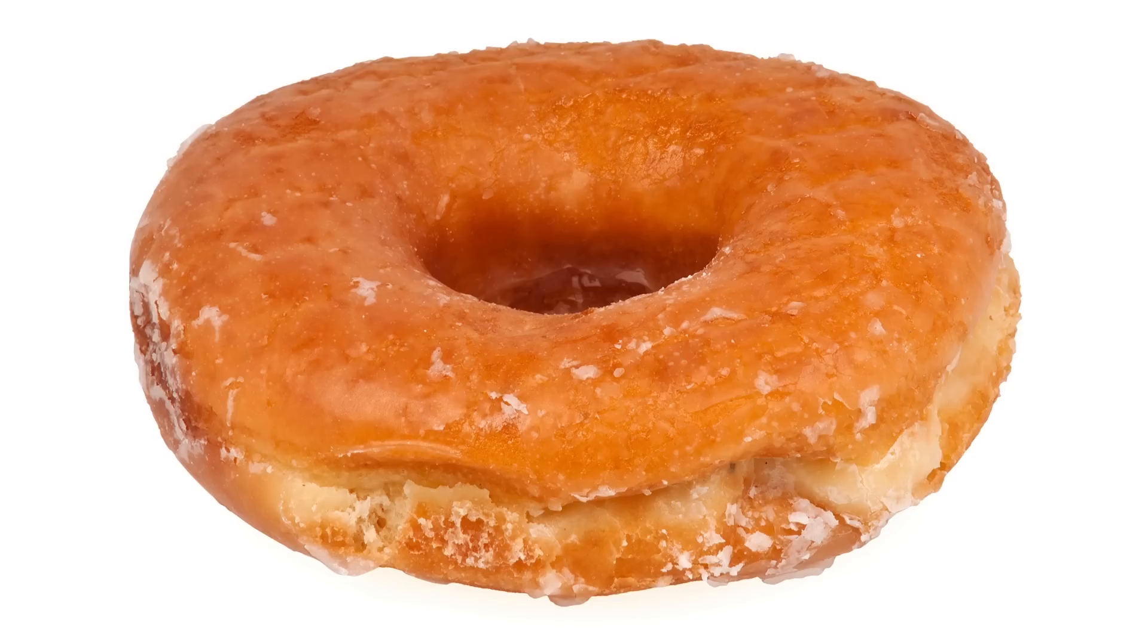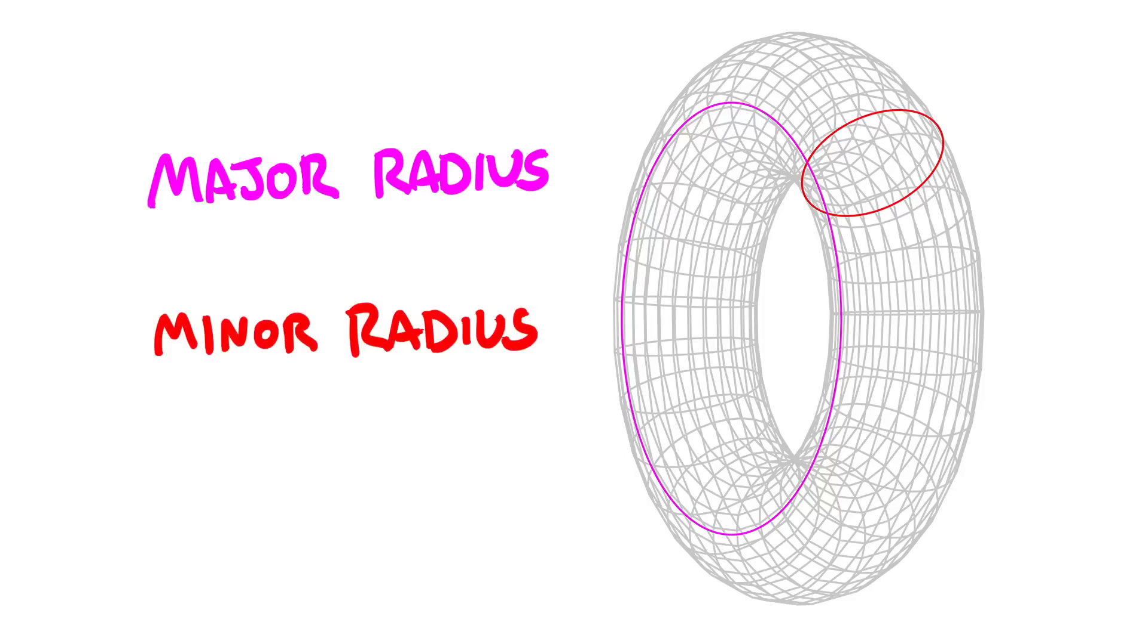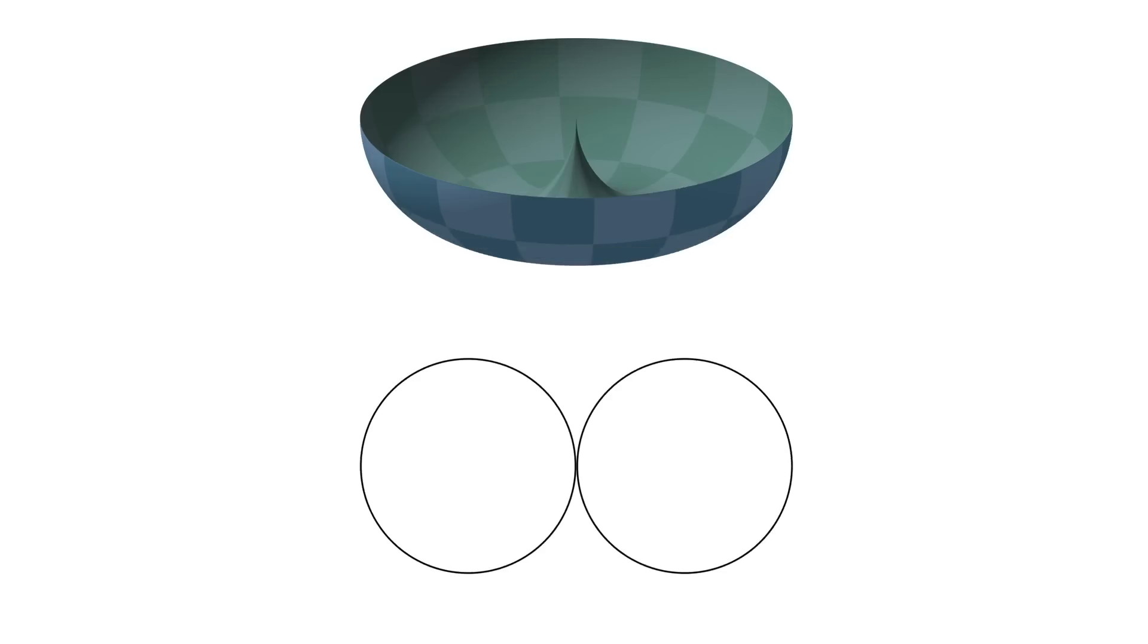This is a donut, or more precisely, a most delicious torus. Any torus, delicious or not, has two radii: a major radius and a minor radius. There are many different types of torii: ring torii, horn torii, and spindle torii.